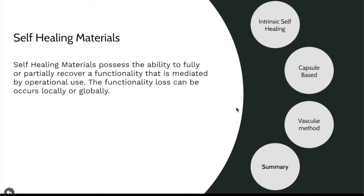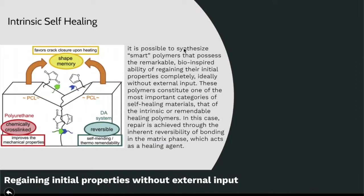The first method is called intrinsic self-healing. The mechanism uses shape memory in a polymer system — specifically PCL (polycaprolactone) with a polyurethane system. The polyurethane improves mechanical properties while the other component improves the shape recovery ability.